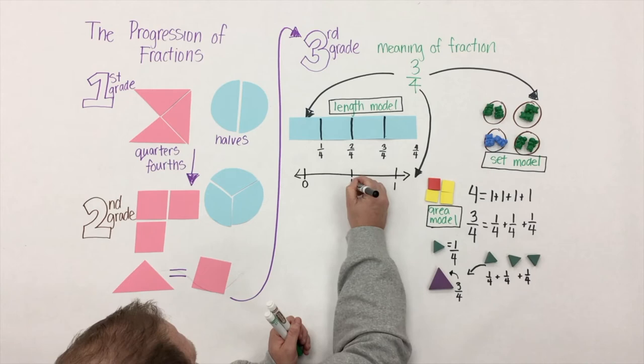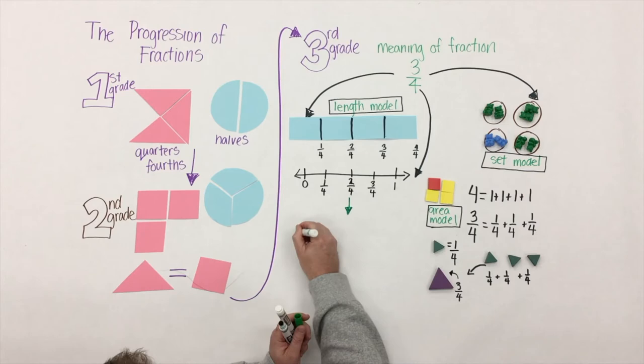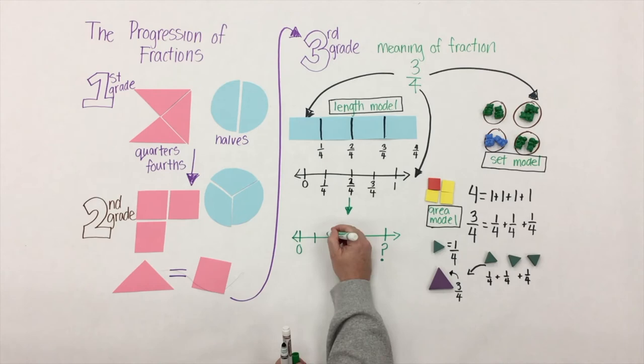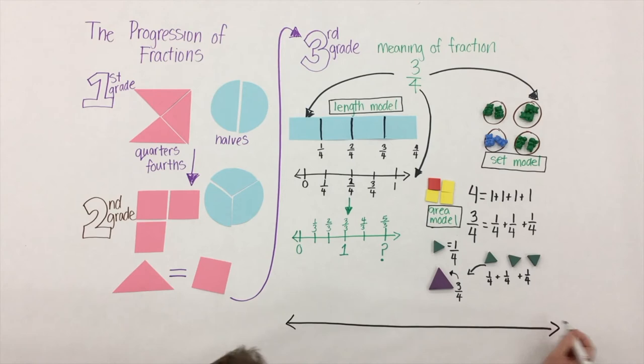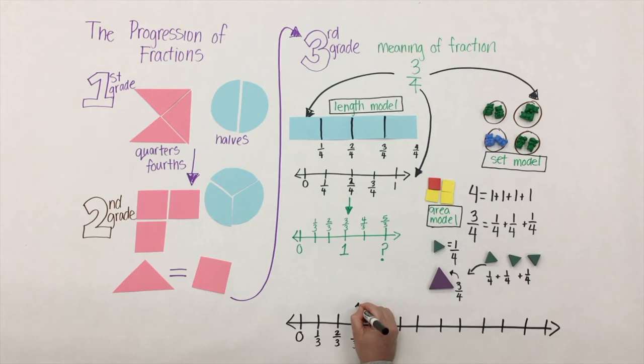Let's go back to that length model. That length model is a really powerful tool because it helps build students' understanding, which can also be done through a number line. Here's another number line - what number is the question mark here? Wait a minute, that's greater than one! In third grade, students need to see that fractions can also represent numbers greater than one. It's the sum of unit fractions. We might want to get students to begin counting with fractions: one-third, two-thirds, one, four-thirds, five-thirds, two.